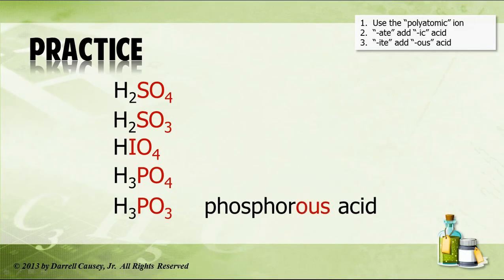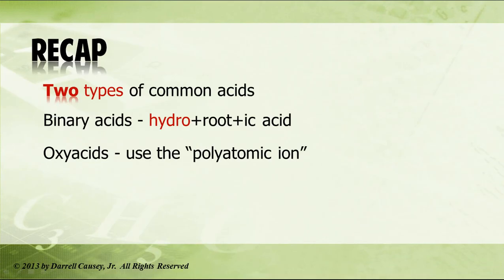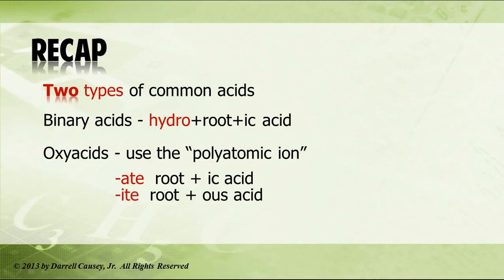Pretty simple, isn't it? Just got to remember the rules. Let's recap: two types of common acids. Binary acids — take hydro, add the root of the other substance, add -ic, and say acid. Oxy acids use the polyatomic ion: if it ends in -ate, take the root of the third element, add -ic and acid. If it ends in -ite, take the root of the third element, add -ous and acid.